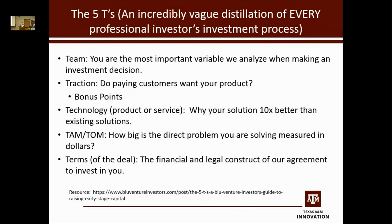Every professional investor's investment process distills down to five points. First is team — you are the most important variable we're looking at. We want to know who you are before making an investment decision. Second is traction: does a customer with money want to give you that money to solve their problem? Bonus points if you can solve multiple problems. Third is technology: why does your solution solve my problem ten times better than any available solution? Can I optimize you out of my equation? And I focus on the actual obtainable market — how big is the direct problem you're solving, measured in dollars.